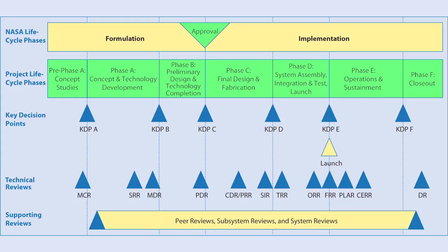The idea is to have these gates in place — both technical and programmatic — to make sure the right amount of progress is being made. It's not a set-in-stone process where each phase takes a fixed amount of time; it's really about waiting until the system is mature enough. You go through the gate, show all the specific products required at that review — like a requirements review where you show all of your requirements — and you're either given a go-ahead or told to do further work before proceeding.